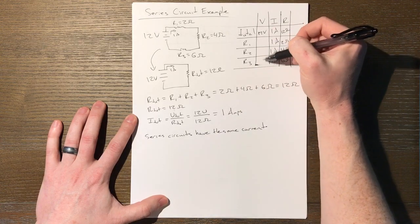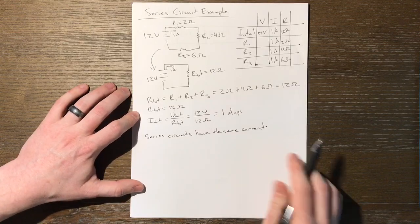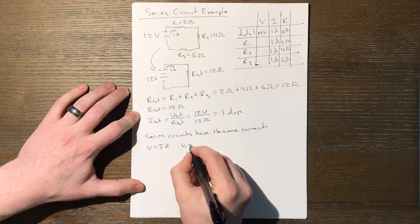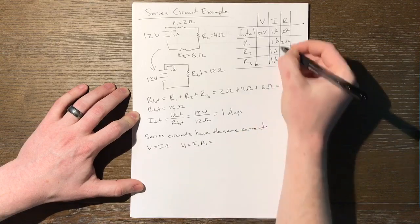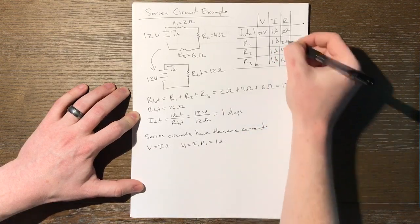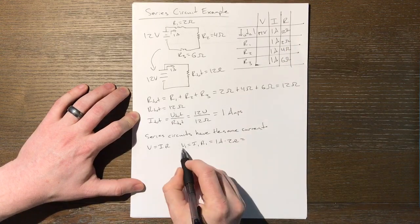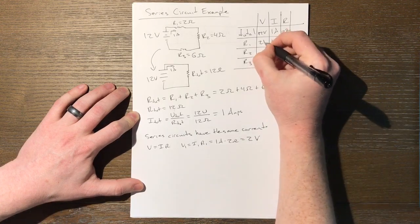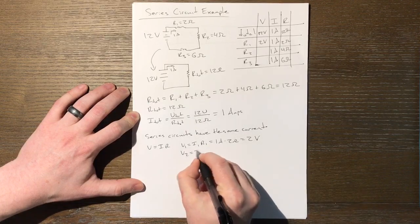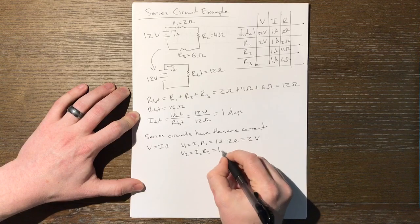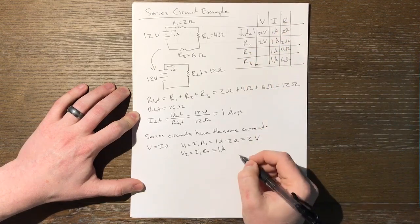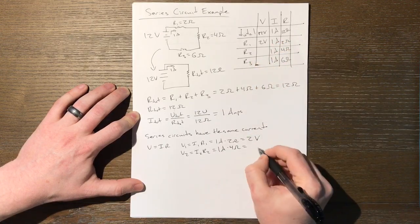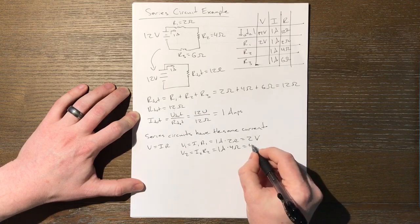Well, V equals IR across individual components. That means V1 equals I1 R1. I1 is one. One amp times R1 is two ohms. We know we're getting volts because this is a voltage, so amps times ohms is volts. Two volts would be V1. Two volts. V2 is I2 R2. That's going to be one amp is I2. Times R2 is four ohms. Four ohms. Amps times ohms again is volts because we know this is voltage. Four volts.